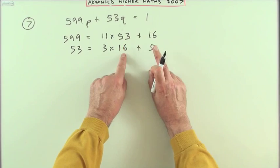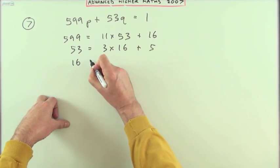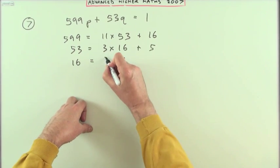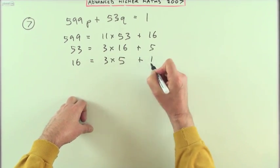Same again. Now it's the 16 and the 5 I'm interested in. They hold the key to the greatest common divisor. Well that's going to be 3 lots of it, with just 1 left over.